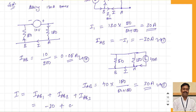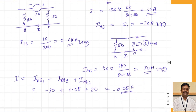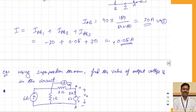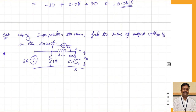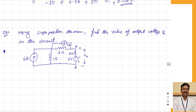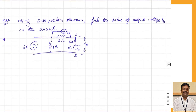The actual current when all sources are acting together is the sum of responses: I(A to B) = −30 + 0.05 + 30 = 0.05 amperes. The positive sign means the current flows in the assumed direction from A to B. Now let us take one more example to further clarify — this time we need to find the output voltage V0 using the superposition theorem. There are three sources in the circuit, so we will write three equations.